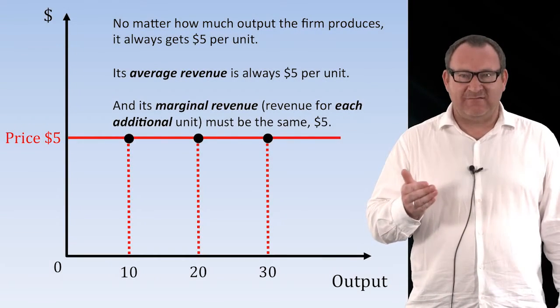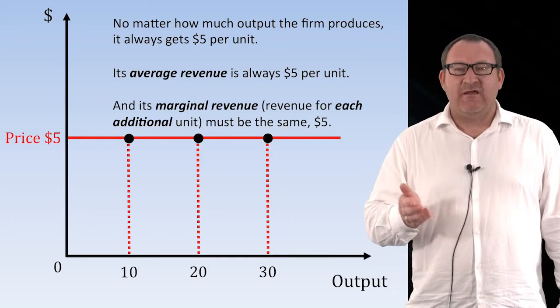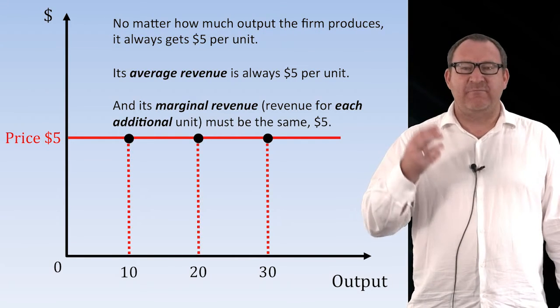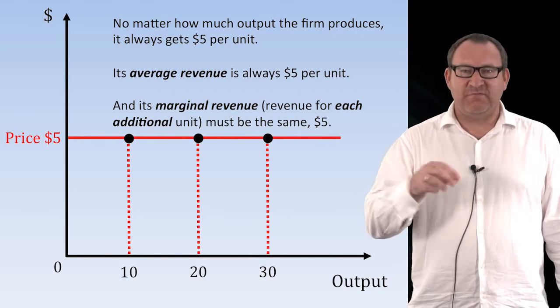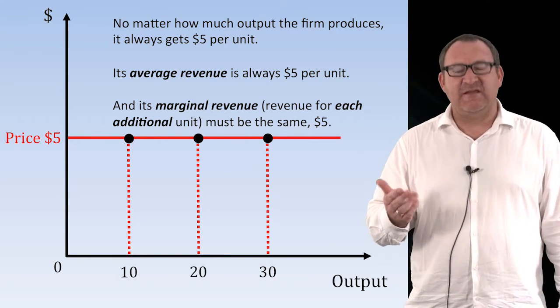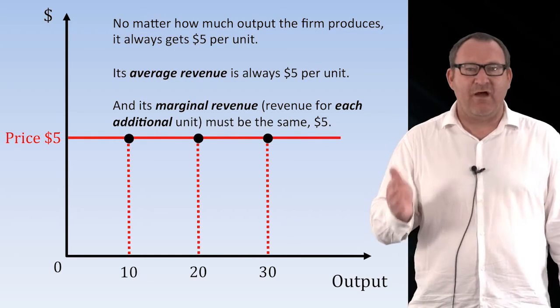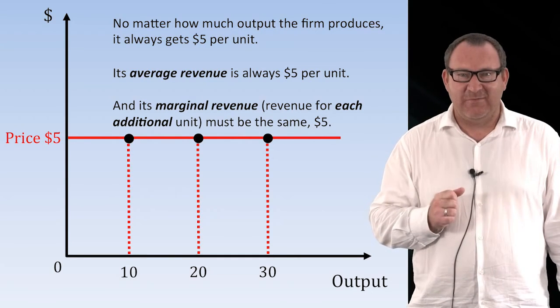If we think of this in terms of average revenue — the revenue per unit of output sold — then we know that this is going to be $5 as well. Average revenue is simply the price from the perspective of the firm. Consumers pay $5 per kilo, and the firm receives $5 per kilo in revenue. So average revenue and price are the same amount of money, no matter what.